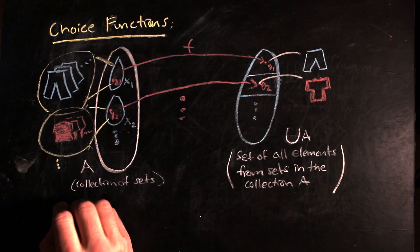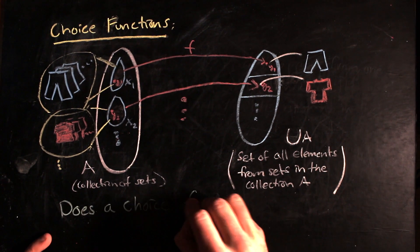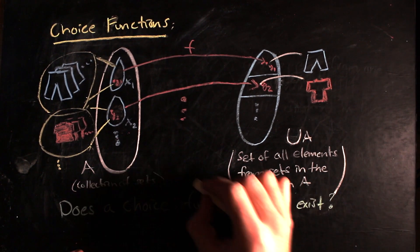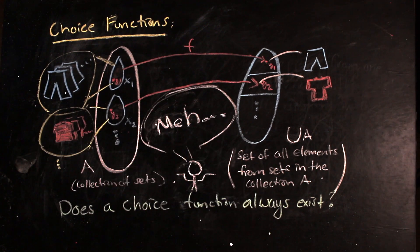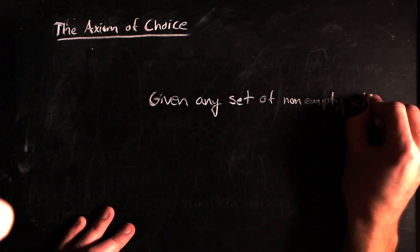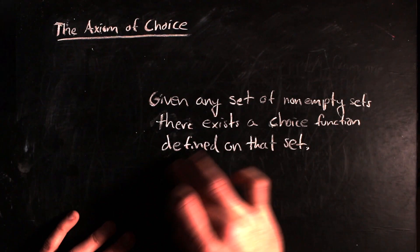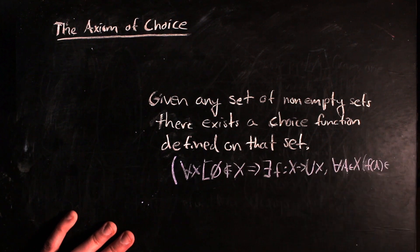The next question you might ask might fall along the lines of, given any set, does a choice function always exist? And the answer is dependent on how you want to do math. Literally. The statement, given any x of non-empty sets, there exists a choice function f defined on x, is the axiom of choice.